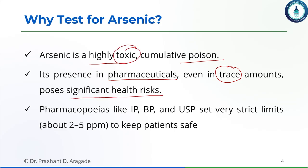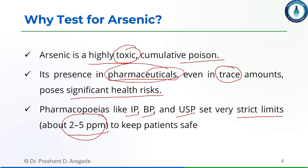Official books like the Indian Pharmacopoeia, British Pharmacopoeia, or USP have set very strict limits of about 2 to 5 ppm (parts per million) to keep patients safe. If the limit test for arsenic shows arsenic present as an impurity in a pharmaceutical above this limit, that pharmaceutical is not safe for patients. The limit test is performed to detect whether a harmful amount of impurity is present in pharmaceuticals.